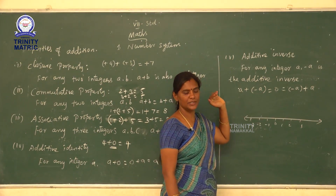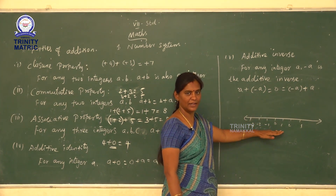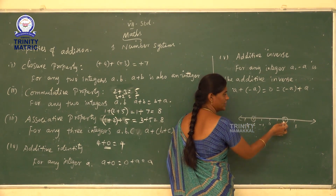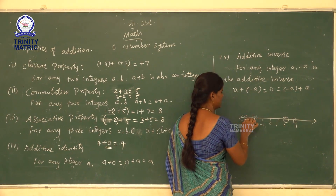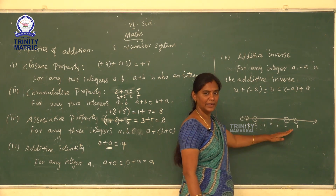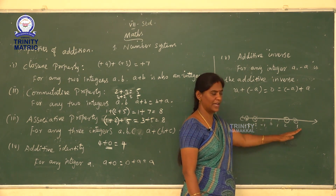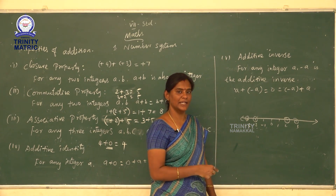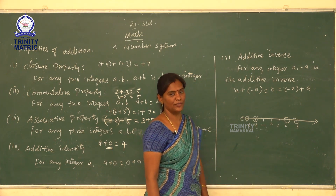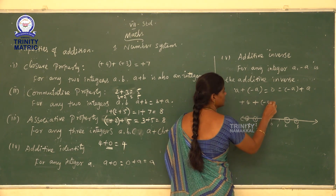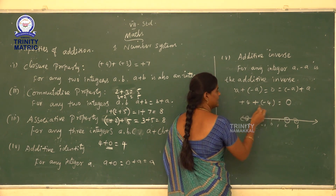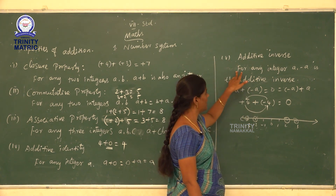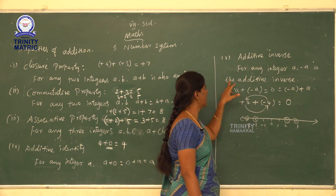Next, additive inverse. Every integer has an opposite integer. For example, the opposite of plus 2 is minus 2, and the opposite of plus 3 is minus 3. Zero separates the number line into positive and negative sides. When we add two integers and the answer is zero, the two integers are additive inverses of each other. For example, plus 4 plus minus 4 equals zero. So plus 4 is the additive inverse of minus 4, and minus 4 is the additive inverse of plus 4. In general form, for any integer a, minus a is the additive inverse.